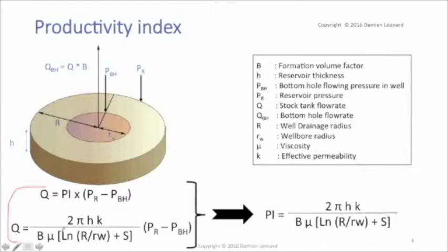which is composed of the natural logarithm of well drainage radius divided by wellbore radius plus s, the skin. We multiply all that by the pressure difference between the reservoir pressure and the wellbore bottom-hole flowing pressure.